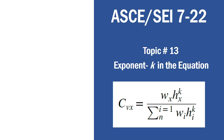Hello, a great welcome to the series on earthquake risk and design of buildings and structures using ASCE 7-22. Today we are at topic number 13 and will address the importance of exponent K that appears in the equation for vertical distribution factor CVX.